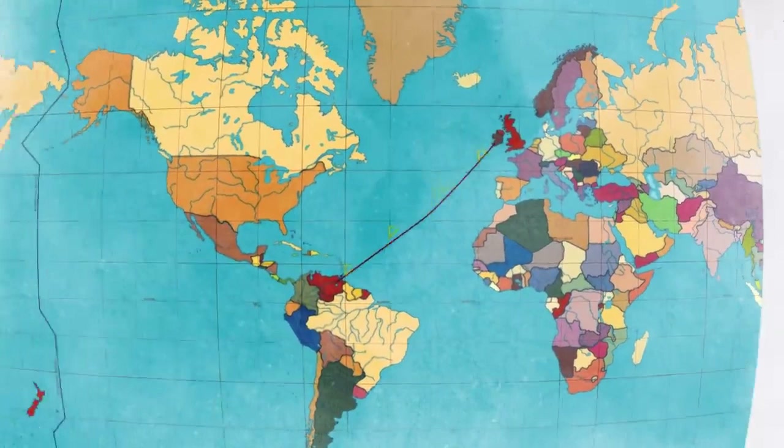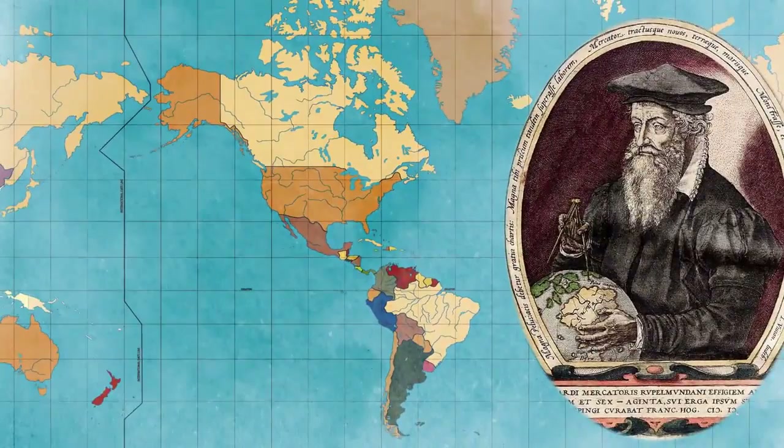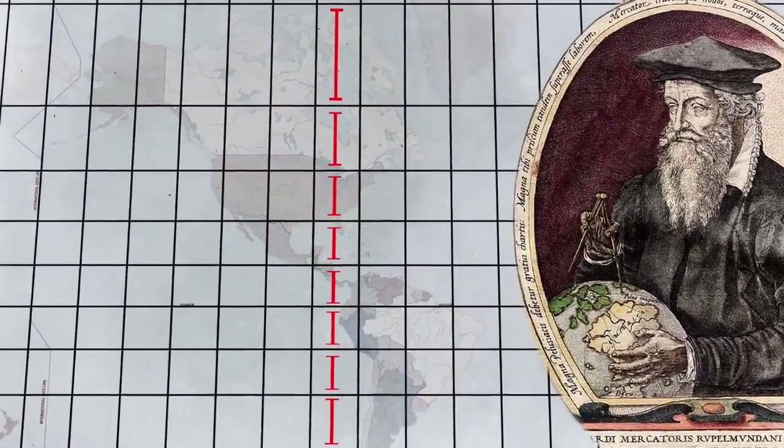If we go back to the globe you can see that this line is not the shortest route, but at least it provides a simple, reliable way to navigate across the ocean. Gerardus Mercator, who created the projection in the 16th century, was able to preserve direction by varying the distance between the latitude lines and also making them straight, creating a grid of right angles.